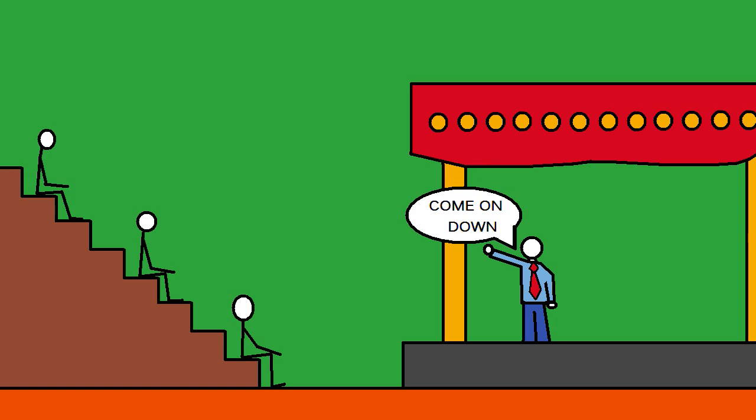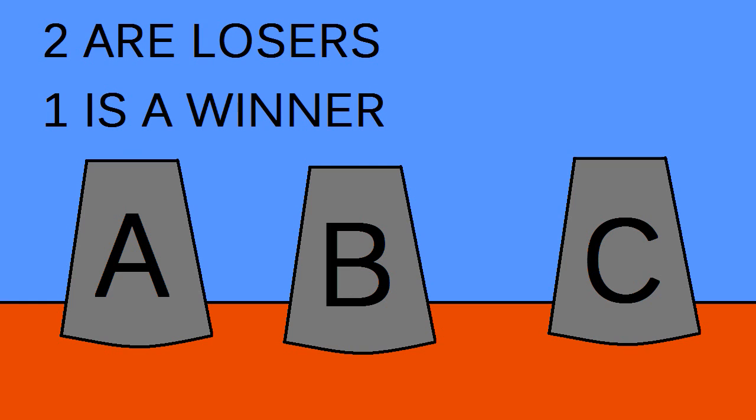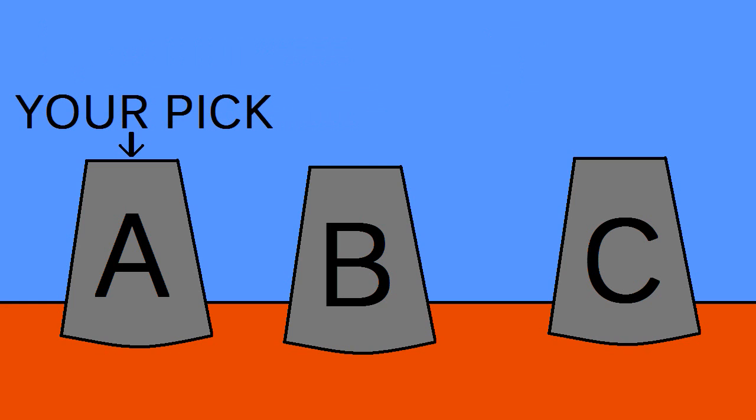So imagine you find yourself on a game show. The host presents to you three cups. Two of the cups aren't worth anything, but under one cup is a diamond ring worth a million dollars. You'll now have a chance to try your luck and see if you can't guess the winner. Let's say you pick cup A.